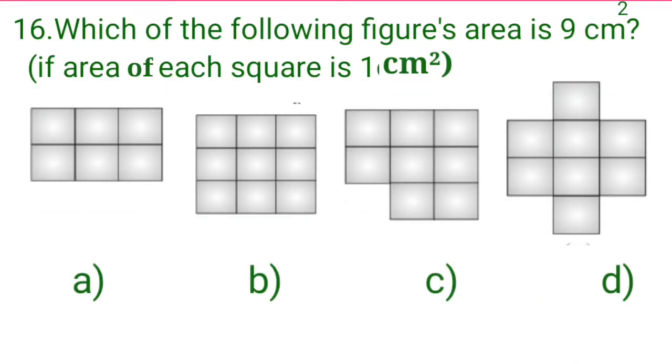Next, question number 16 is, which of the following figures' area is 9 square centimetre, given if each square has the area of 1 square centimetre? Dear students, you see that in every figure, each square is of area 1 square centimetre. So come, let's find which figure has 9 square centimetres. And that's 9 squares.